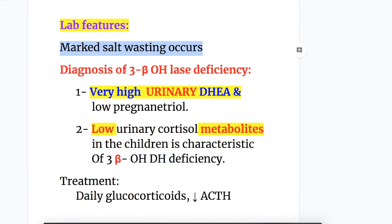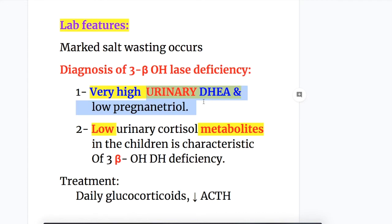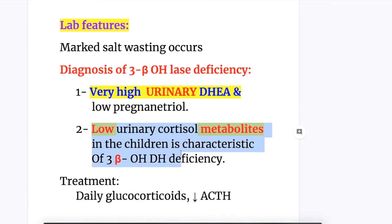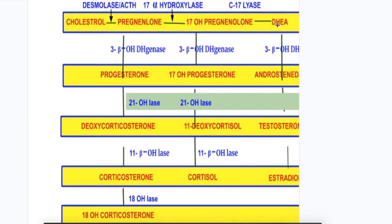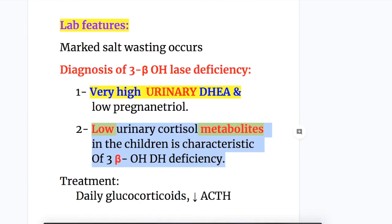The lab features and diagnosis of 3 beta hydroxysteroid dehydrogenase deficiency: there is marked salt wasting. There is very high urinary DHEA and low pregnanediol level, and low urinary cortisol metabolites in children — this is characteristic of 3 beta hydroxylase deficiency. Treatment is glucocorticoids, which decrease ACTH production, thereby decreasing adrenal gland hyperplasia and hypertrophy.